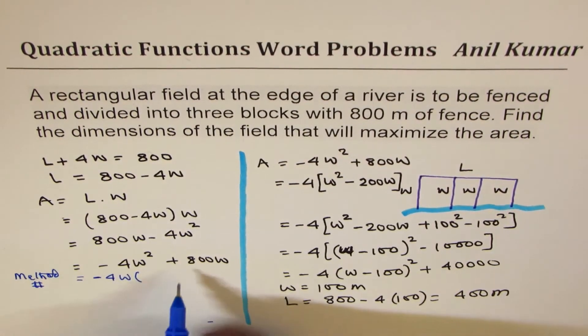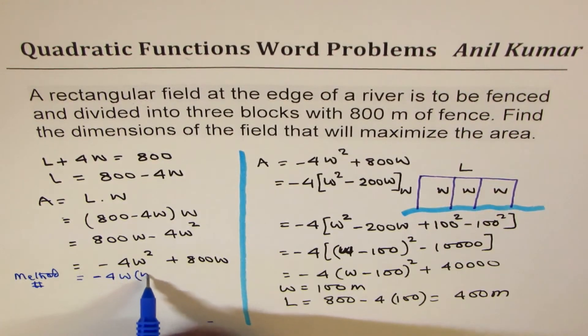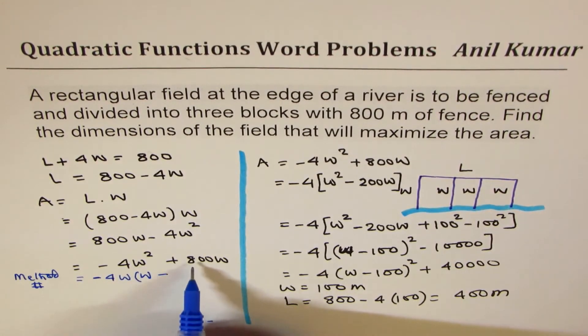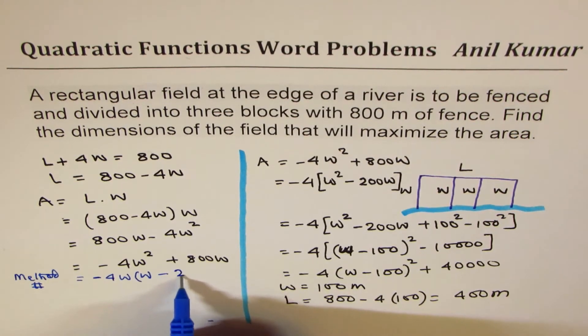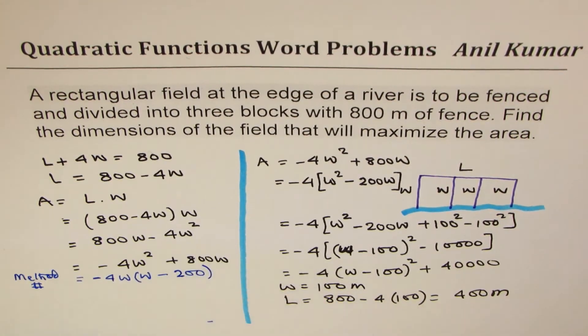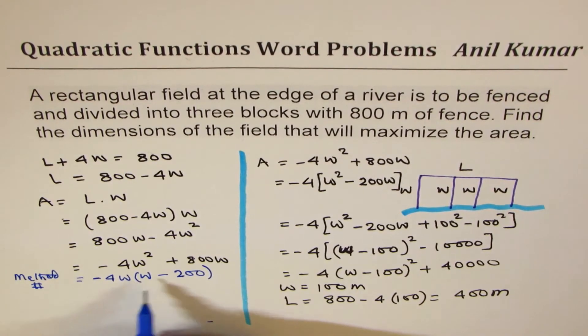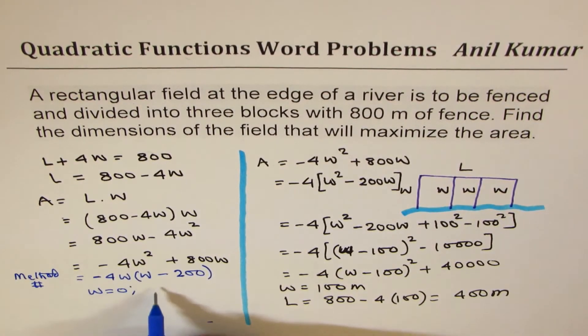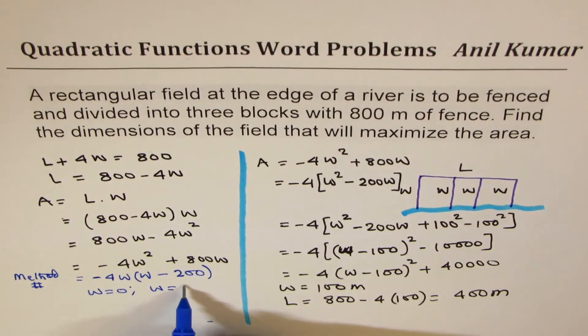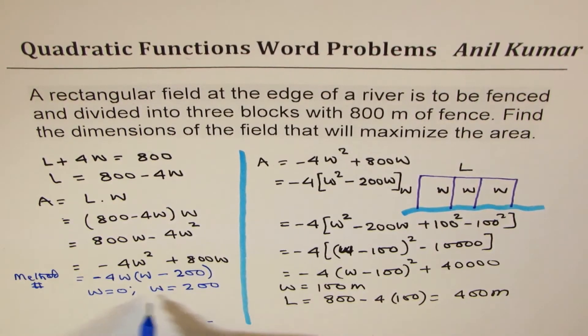So we are factoring minus 4W taken common, you get W minus 200. W has been taken out, so here we have two zeros: one zero is at W equals zero, the other one at W equals 200.